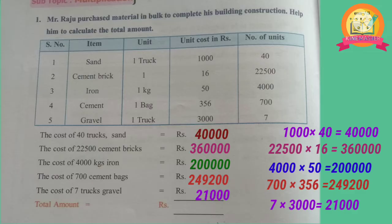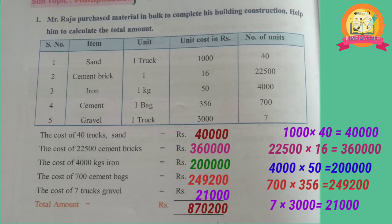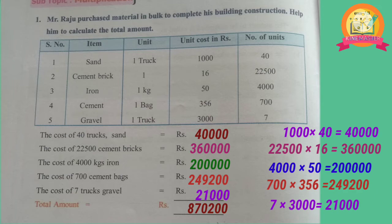The cost of 22,500 cement bricks: multiply the required bricks with the cost of 1 brick; we get 3,60,000. The cost of 4,000 cages of iron: 4,000 multiplied with 50, we get 2,00,000. The cost of 700 cement bags: 700 multiplied with 356, we get 2,49,200.